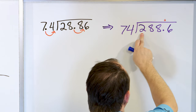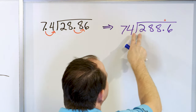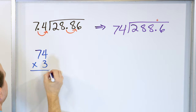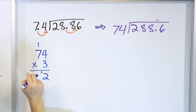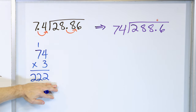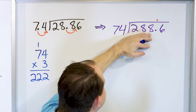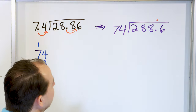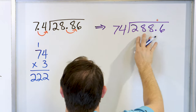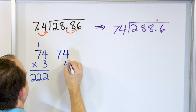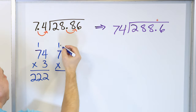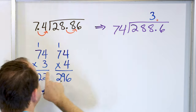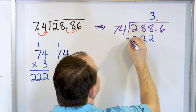74 can't go into 2 — too small. 74 can't go into 28 — too small. 74 can go into 288. I'm not sure how many times, so let's try multiplying by 3: 3 times 4 is 12, carry 1; 7 times 3 is 21, one more is 22. So 74 times 3 is 222, and I'm trying to get as close as I can to 288. Let's check times 4: 4 times 4 is 16, 7 times 4 is 28, one more is 29 — that's 296, which is too big. So it has to go only 3 times. Three times 74 is 222, and we subtract: 8 minus 2 is 6, 8 minus 2 is 6, 2 minus 2 is 0.